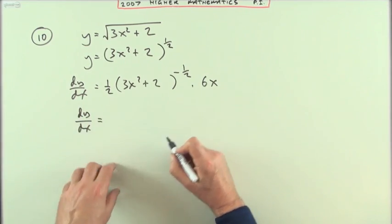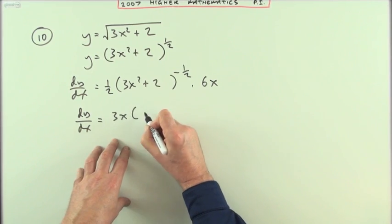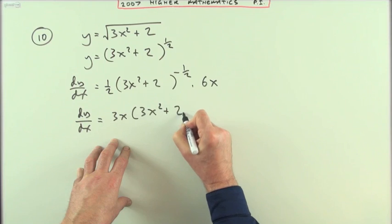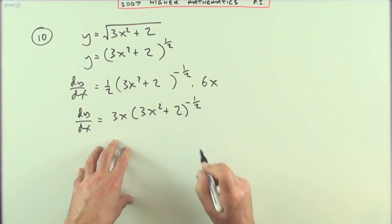So dy by dx will be a half of 6x, which is 3x times 3x squared plus 2 to the power negative a half.